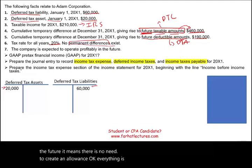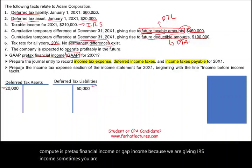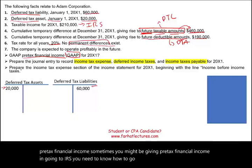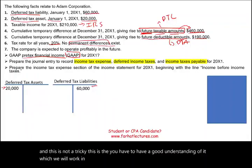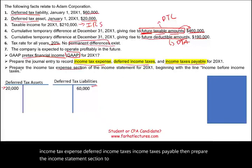Everything is given. The first thing we need to compute is pre-tax financial income, or GAAP income, because we are given IRS income. Sometimes you are given IRS income and have to get to GAAP income, which is pre-tax financial income. You need to know how to go back and forth between the two. Then we need to prepare journal entries to record income tax expense, deferred income taxes, and income taxes payable. Then prepare the income statement section showing how income tax expense is presented.